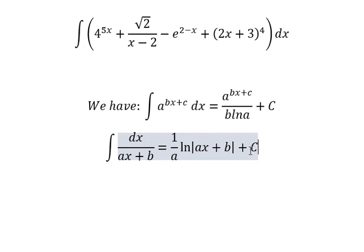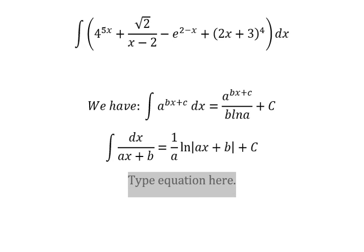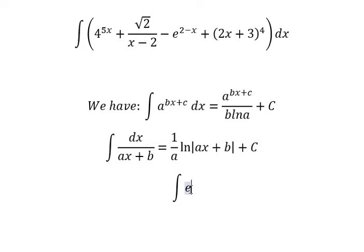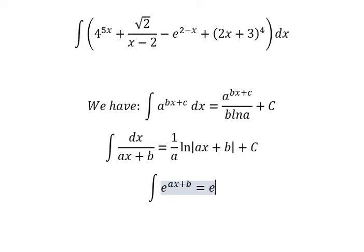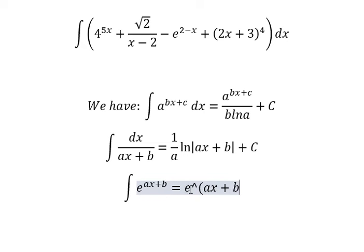The next formula: the integration of e to the power of (as + b) equals e to the power of (as + b) over a, plus the constant C.